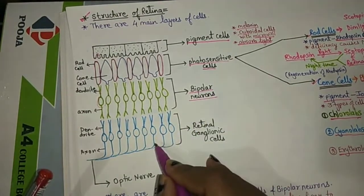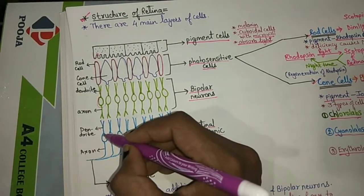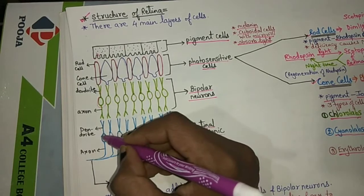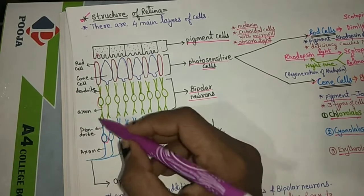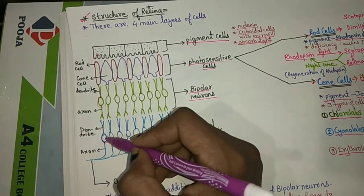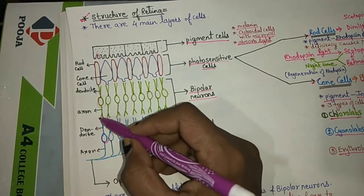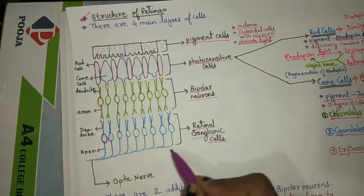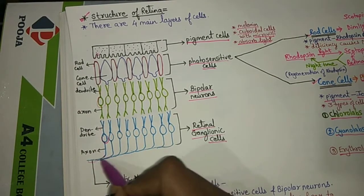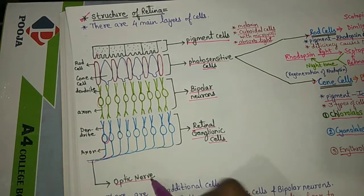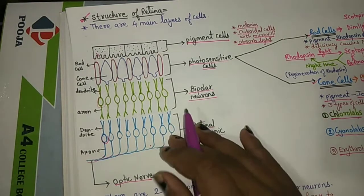The fourth layer is the retinal ganglionic cells. These are also neuron cells with a cell body, dendrites, and an axon. The dendrites of the ganglionic cells form a synapse with the axon part of the bipolar neurons, and the axons of the ganglionic cells come together to form the optic nerve.